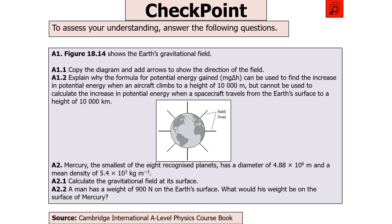The next question says: copy the diagram of Earth's gravitational field and add arrows showing the field direction; explain why MgΔH can be used for an aircraft climbing to 10,000 m but not for a spacecraft travelling to 10,000 km; then Mercury has diameter 4.88 × 10⁶ m and mean density 5.4 × 10³ kg/m³ — calculate its surface gravitational field strength; and then a man weighing 700 N on Earth — what would his weight be on Mercury? Pause the video now.